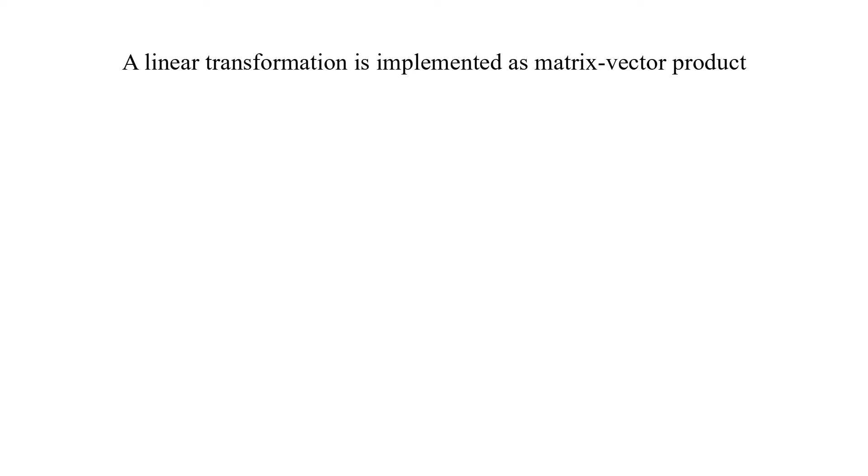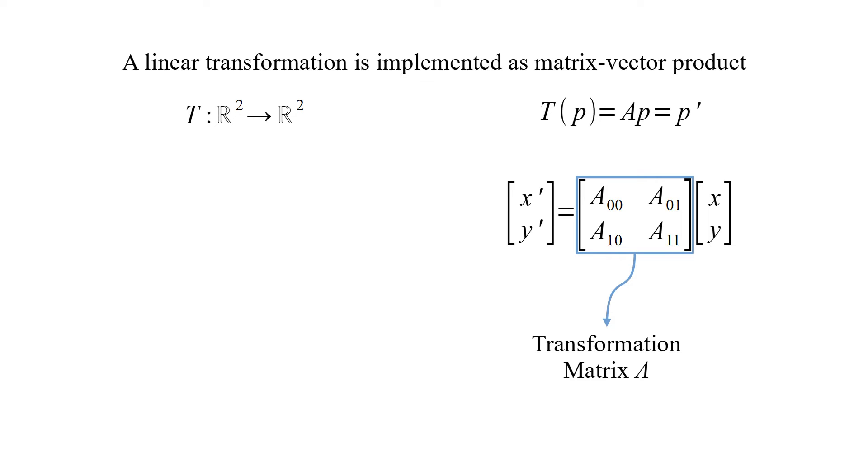A linear transformation is implemented as matrix-vector product. T of P is equal to A times P, where A is the transformation matrix. It can be expressed as matrix equation with transformation matrix A, input vector P, and output vector P'.